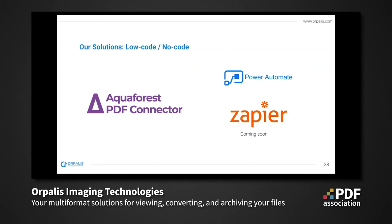We've recently developed a Power Automate connector for PDF data extraction. The Aquaforest PDF connector extracts data and text from documents without the need for preset models or templates. Additional capabilities include PDF OCR, splitting and page extraction of PDFs based on barcodes or text patterns. More low-code and no-code connectors and microservices will be available soon on different marketplaces like Zapier.